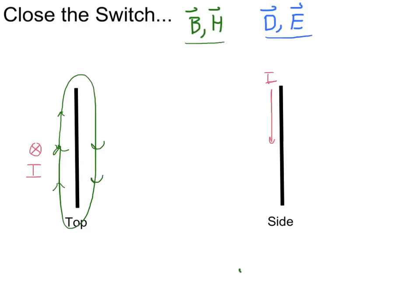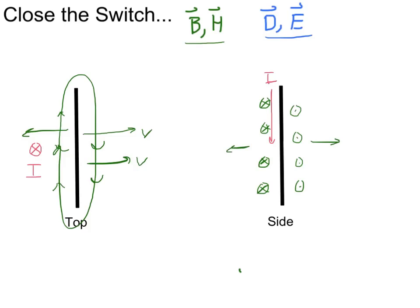In the side view, using the right-hand rule with my thumb pointing down, the magnetic field is coming out of the screen toward you on one side and going into the screen on the other side. One very important point: as soon as the current turns on, the magnetic field doesn't spring up everywhere in space. It starts very close to the wire and propagates outward from the sheet with some velocity v, which we think is the speed of light but haven't yet proven. So the magnetic field propagates away with velocity v.